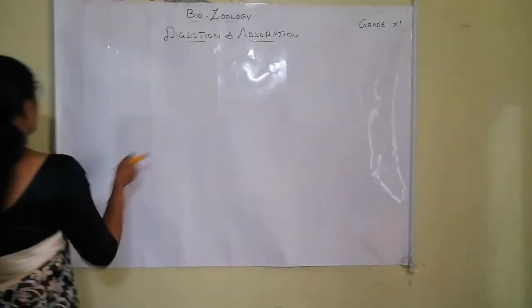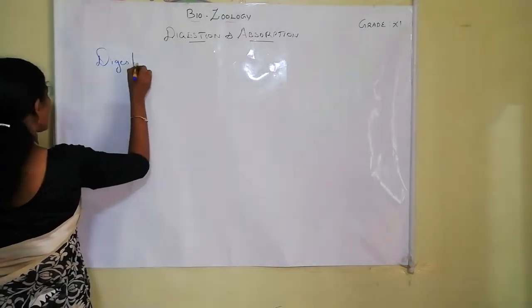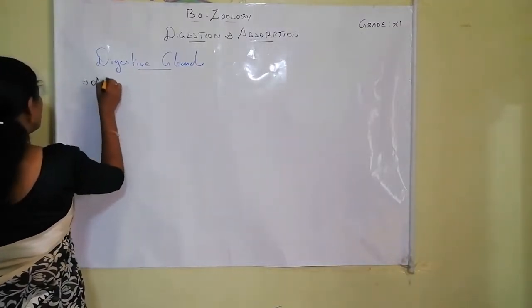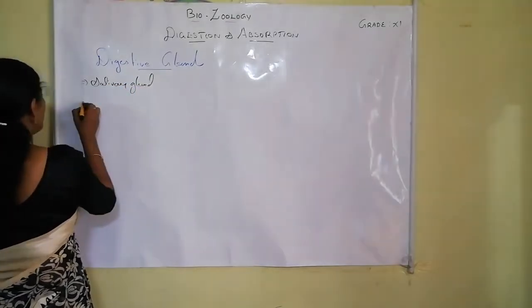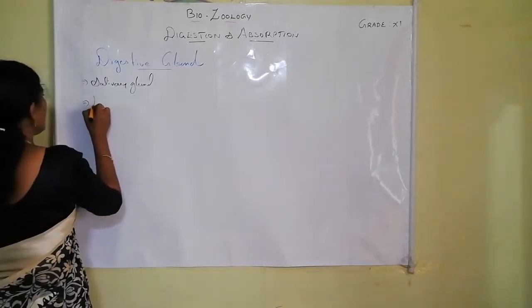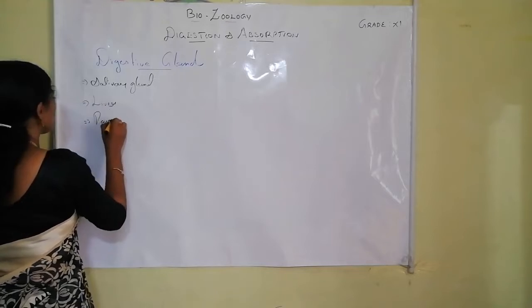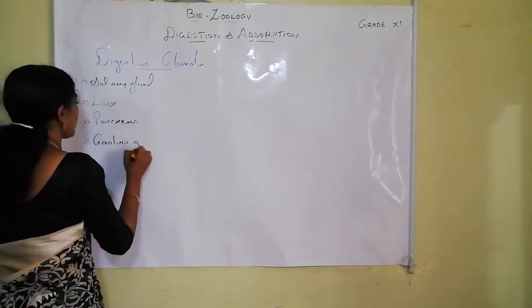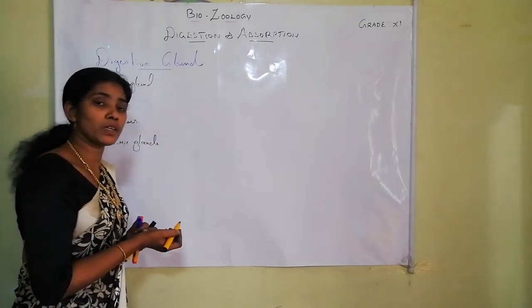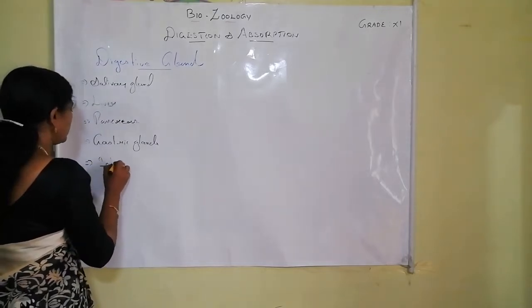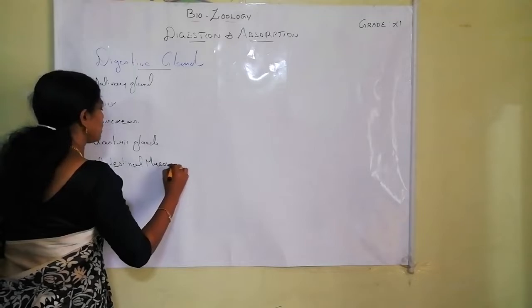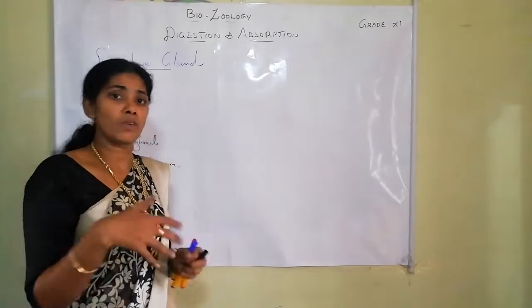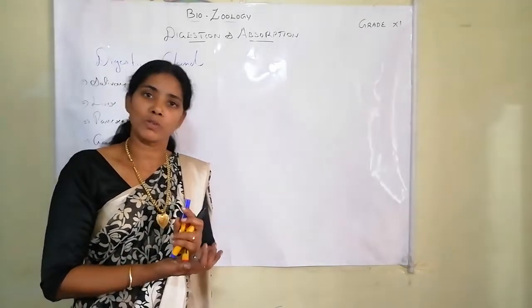The digestive glands are: first, the salivary gland; second, the liver — the largest gland; and the pancreas. There are also gastric glands present in the stomach region, and intestinal mucosa. We will look into the structure and anatomy of each one.